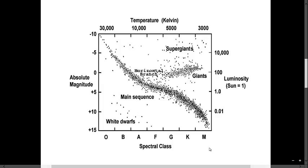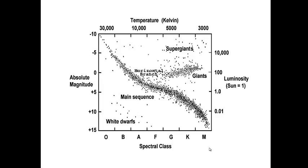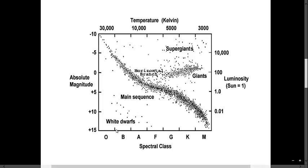Each spectral class is further broken up into 10 subclasses. These subclasses are not depicted on this diagram, but you will see them in one of this week's activities. They are identified by the numbers 0 through 9. For example, a B0 star would be the hottest of the B class stars, whereas a B9 star would be the coolest of the B stars.